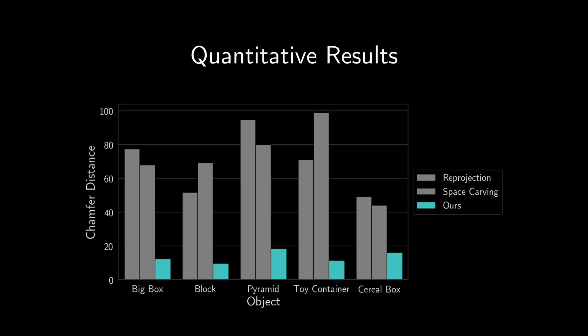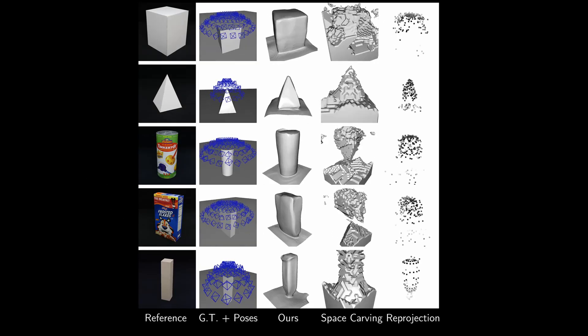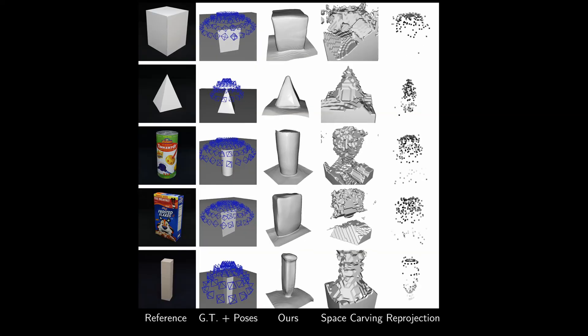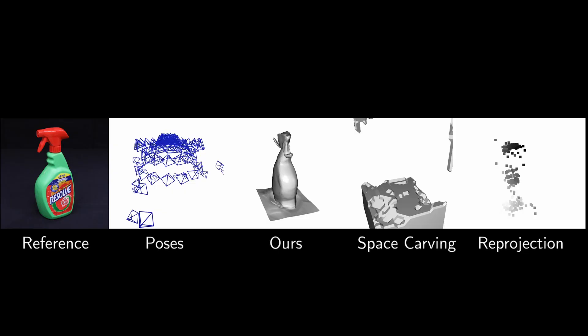We use chamfer distance, a metric for computing the similarity between two shapes, and find that our method more closely resembles the ground truth than baselines do. Further, we find that these results are consistent across many objects, including simple geometries and more complex geometries.